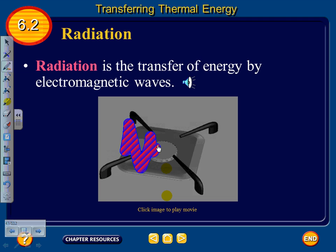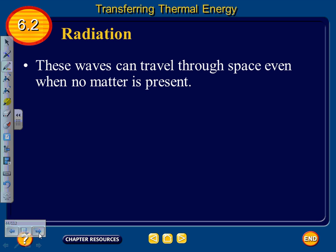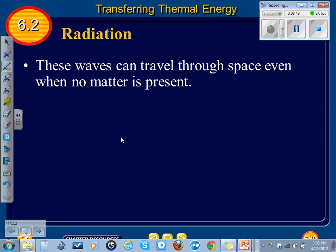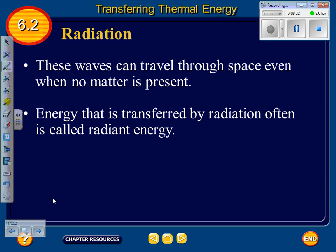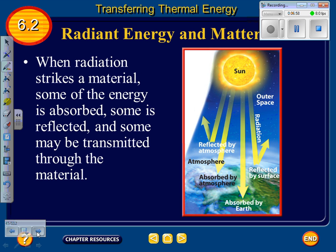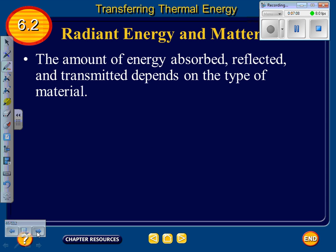To demonstrate radiation — if we get some heat going off this stove and hold a hand near it, you notice your hand feels warmer. That is because the fire is radiating electromagnetic waves. These waves can travel through space even when no matter is present. Energy transferred by radiation is often called radiant energy. When radiation strikes a material, some of the energy is absorbed, some is reflected, and some may be transmitted through the material. The amount depends on the type of material.